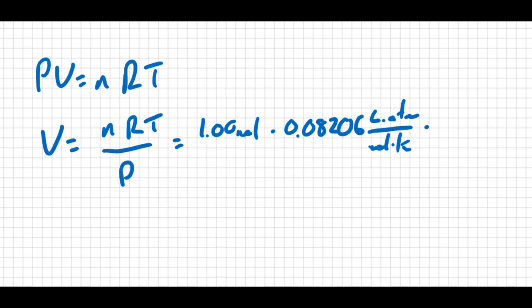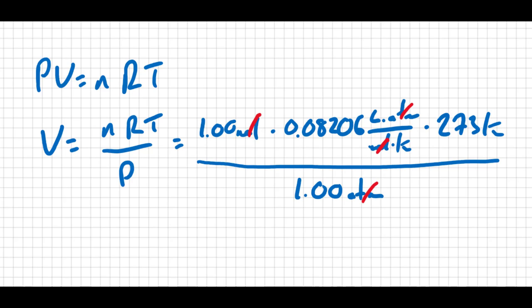And we're going to multiply it by standard temperature. Now I said standard temperature is 0 degrees Celsius, but we want Kelvin, so 273 Kelvin. And we're going to divide it by standard pressure, which is 760 torr, or one atmosphere. Moles cancel out moles. Atmospheres cancel out atmospheres. Kelvin cancels out Kelvin. I'm left in liters. When I do this, I get a volume of 22.4 liters.